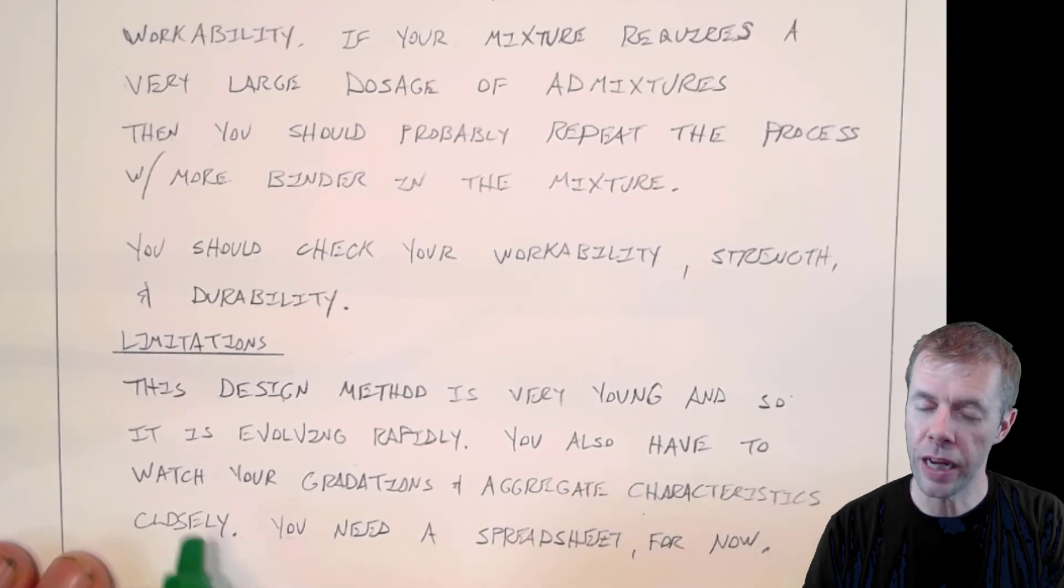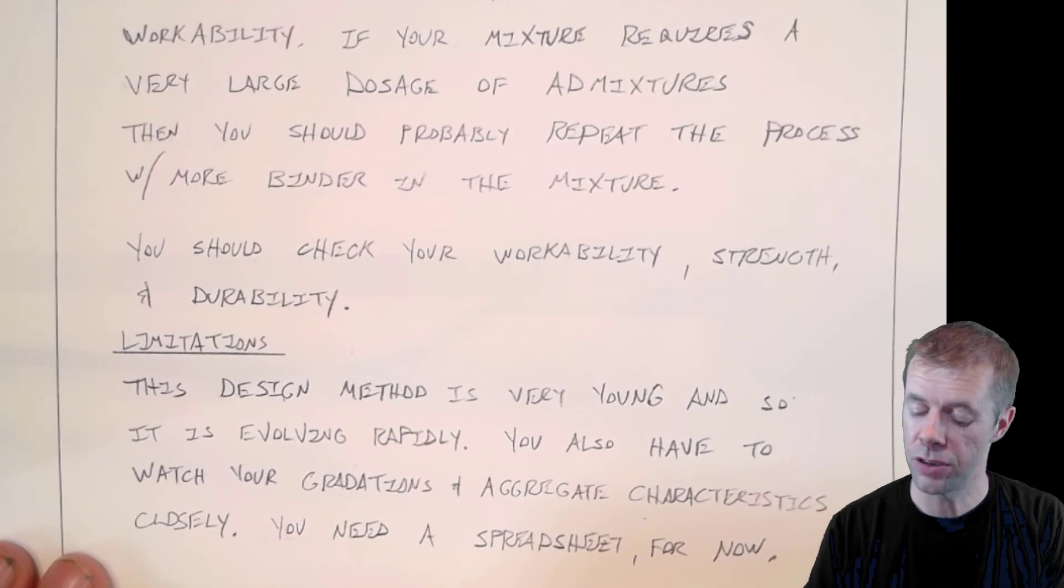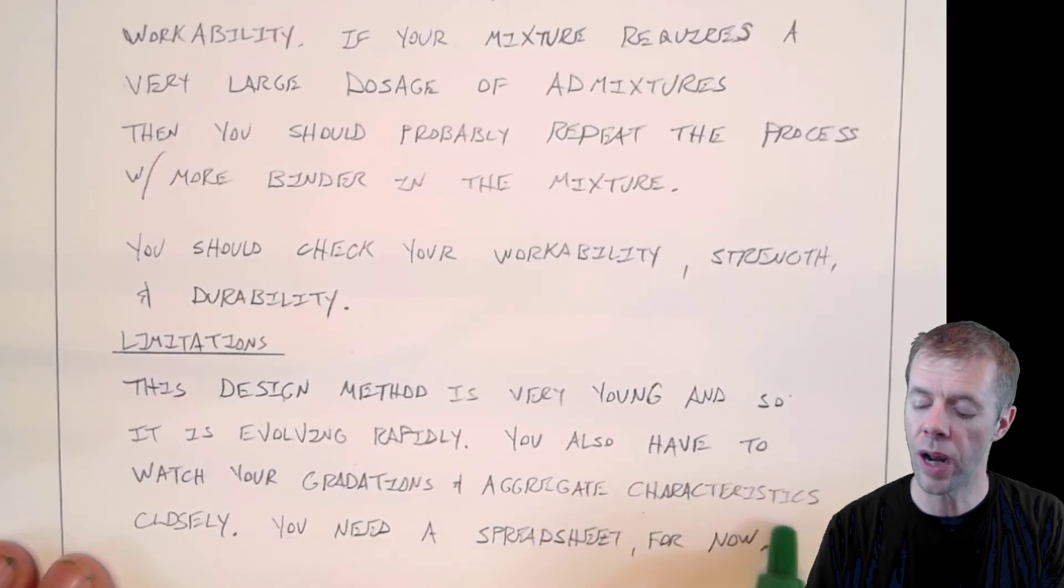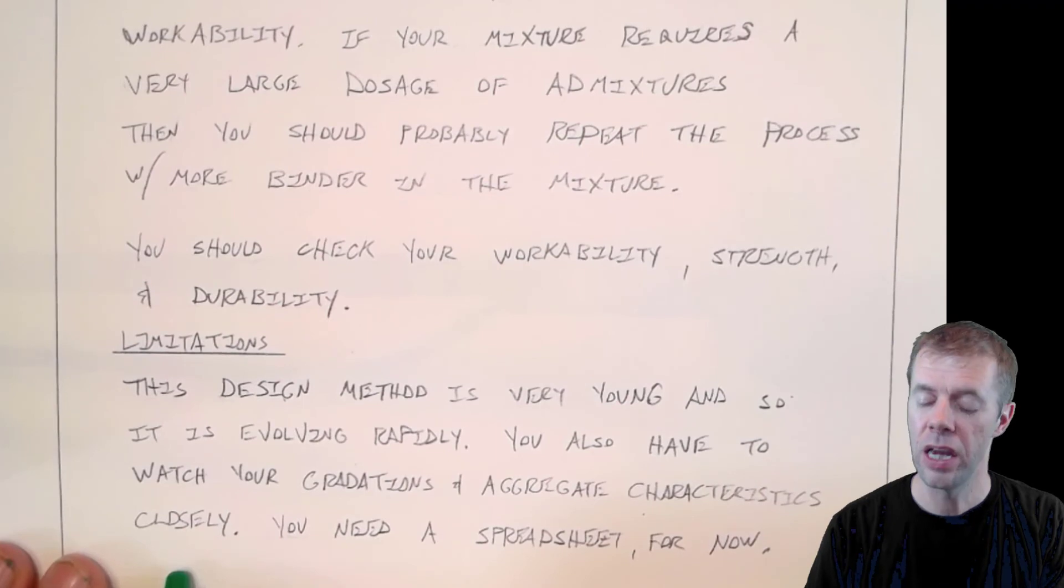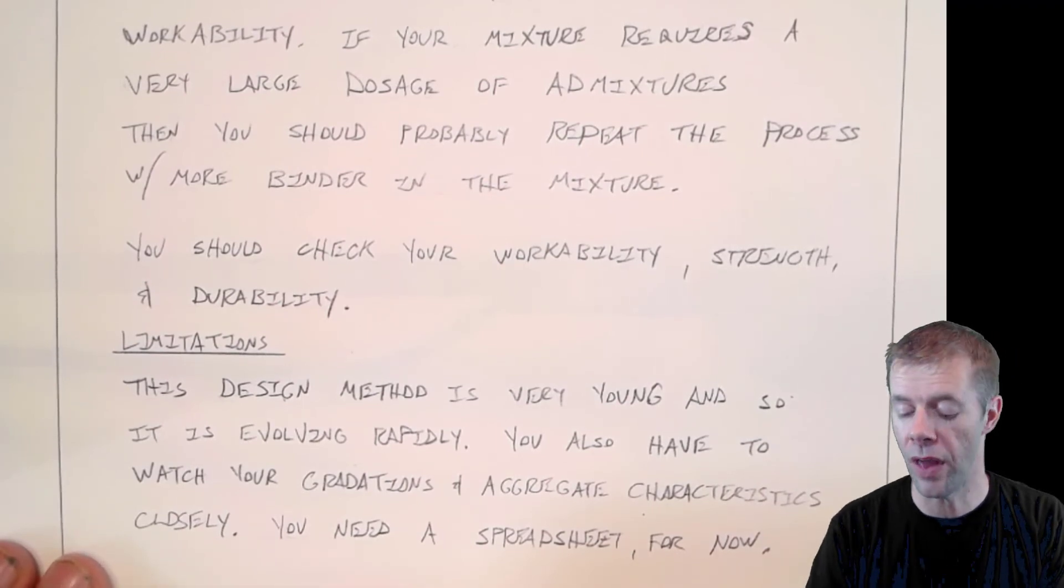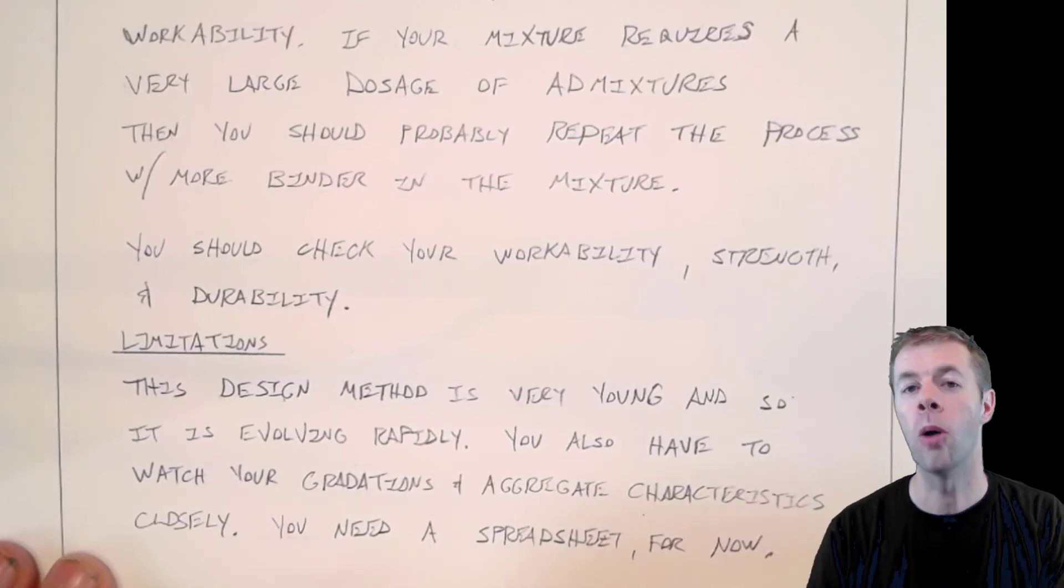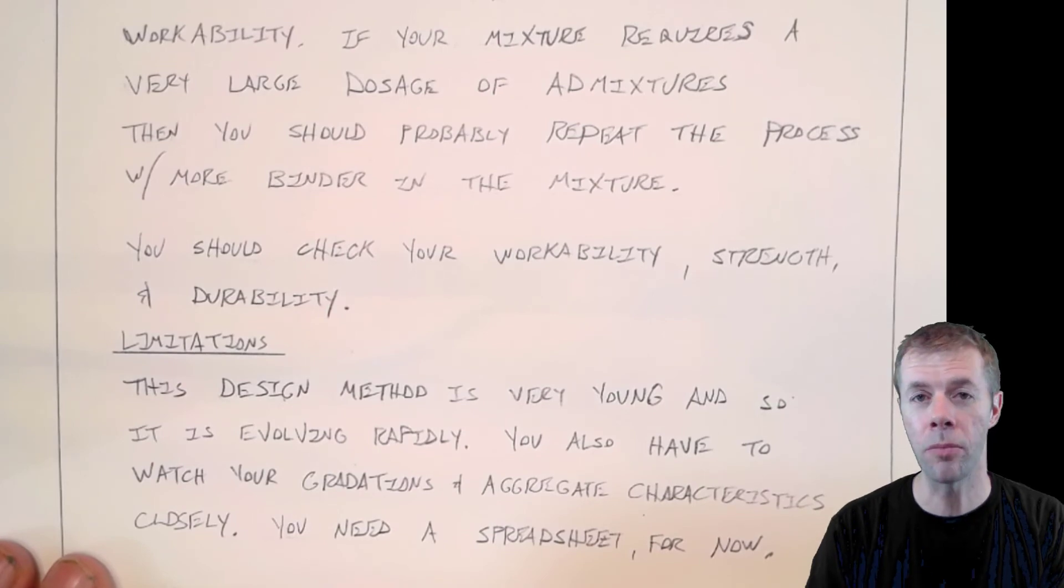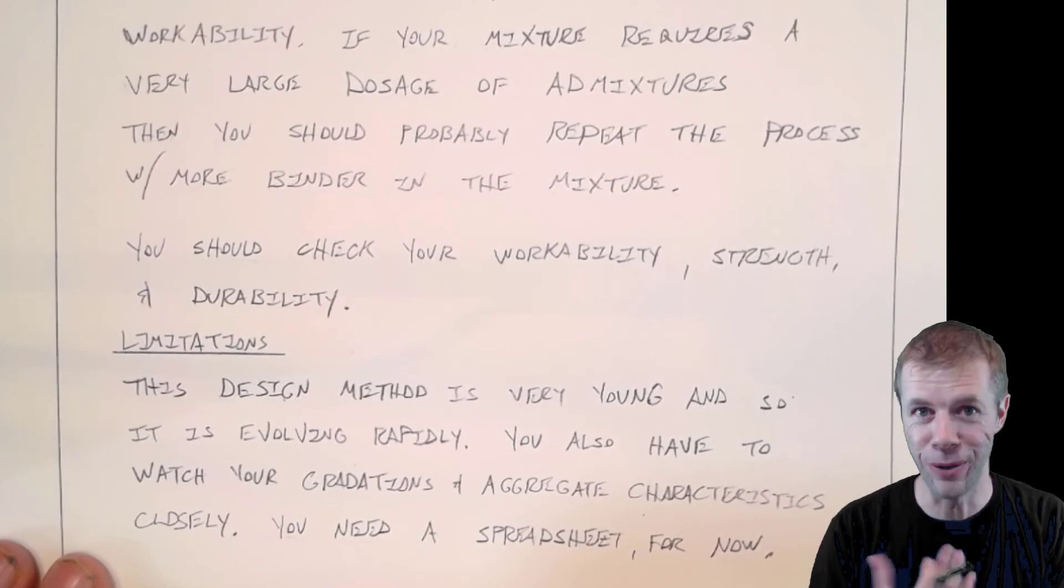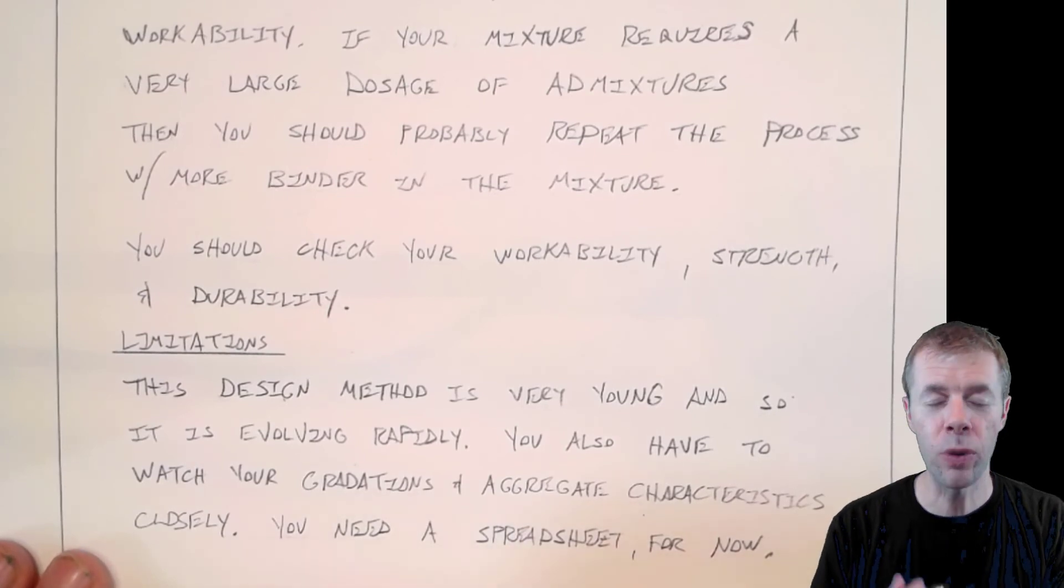But you're also going to have to check your gradations. Because if those gradations are off, then your mixture design needs to change. You're also going to have to look at your aggregate characteristics closely. If they deliver a dirty batch of aggregates, you need to pay attention to that. And you're going to need a spreadsheet to do all this for now. But spreadsheets are pretty easy to use. The world's getting a lot more adjusted to them. And paying attention to all these things are something we should do anyway.